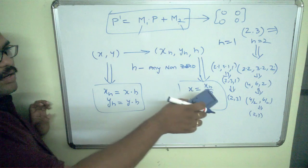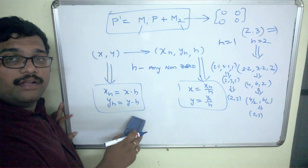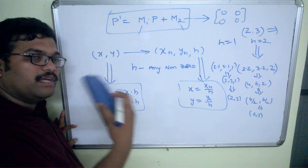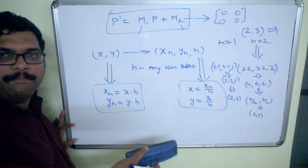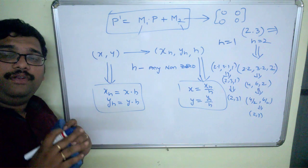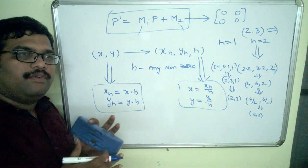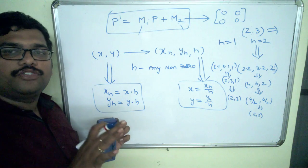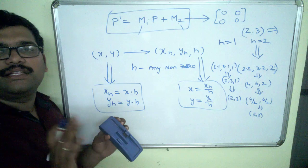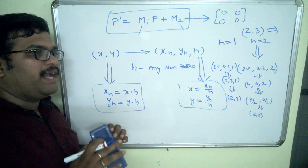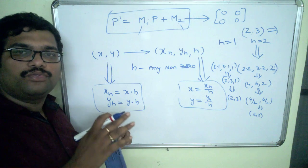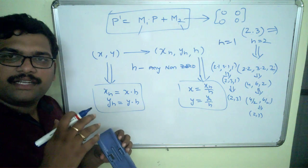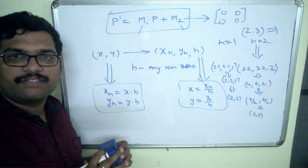After converting to homogeneous coordinates, we need to derive the matrix representation — that means we need to expand the 2×2 matrix into a 3×3 matrix. Remember carefully: even though we are converting the two-dimensional plane into the three-dimensional homogeneous coordinate plane, the formula should not change for translation, rotation, and scaling. Let us see the homogeneous matrix representations for these basic transformation functions.